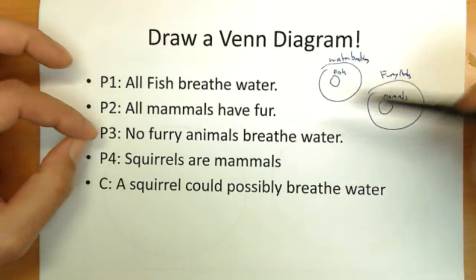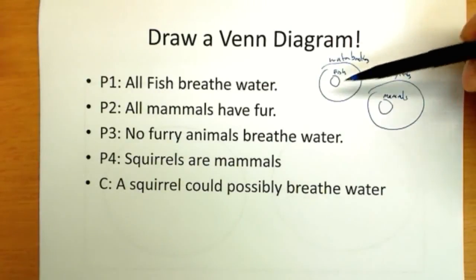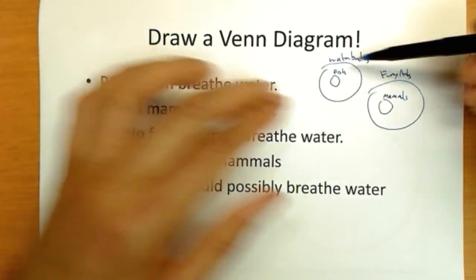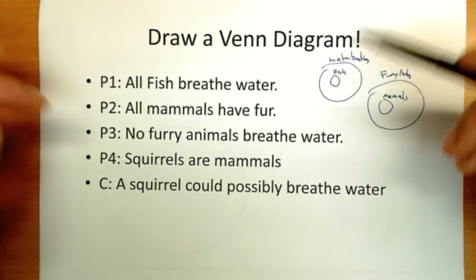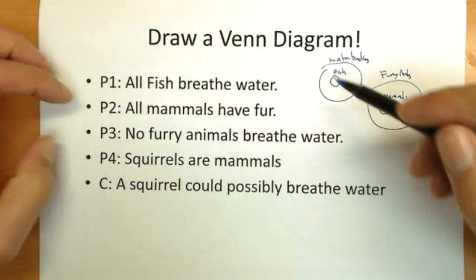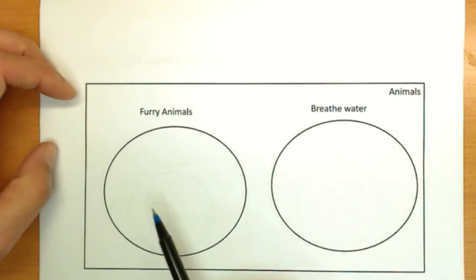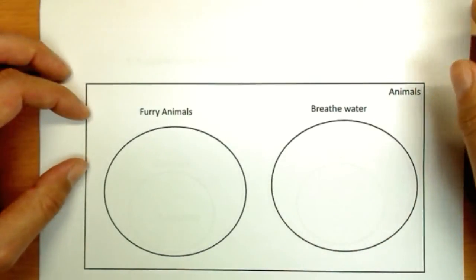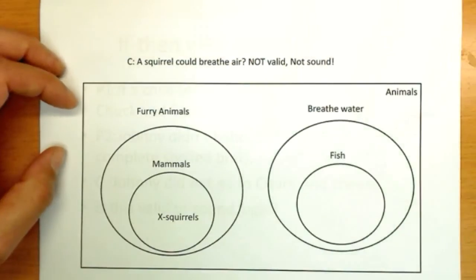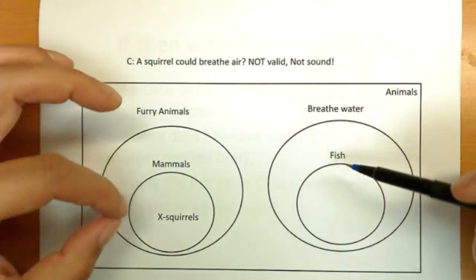Now we look at the third one. No furry animals breathe water. And this, by luck, I've drawn furry animals and water breathing separate. We wouldn't know that until this point. It could have been intersecting. It could have crossed over and been inside each other for all we knew at this point. But the overriding one we're going to have to start with is right here. No furry animals breathe water. And when there's not one of anything doing the same thing, we draw two separate circles. So furry animals and animals that breathe water don't intersect. There's none in the joint group.